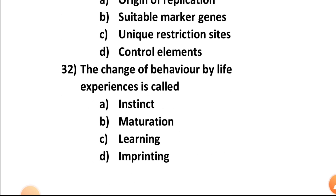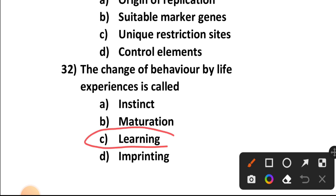Question number thirty-two: The change of behavior by life experiences is called — instinct, maturation, learning, or imprinting? It is learning. Through learning, change of behavior takes place. It can be positive or negative, depending upon our experience towards that situation. Option C.